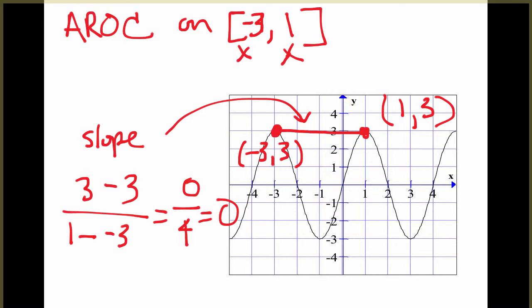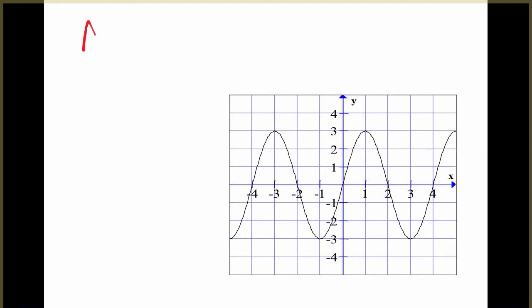Now the difference with average rate of change is the average rate of change will be different depending on what interval you're looking at. So if I just erase this a second, let's now find the average rate of change on the interval from negative 4 to 1. So I've just shifted one point over and I've kept my second interval the same, but notice this is getting me a much different line. So this now, the average rate of change will be positive, and that's just giving you the overall change, just on average what's happening. It doesn't matter what happens in between.